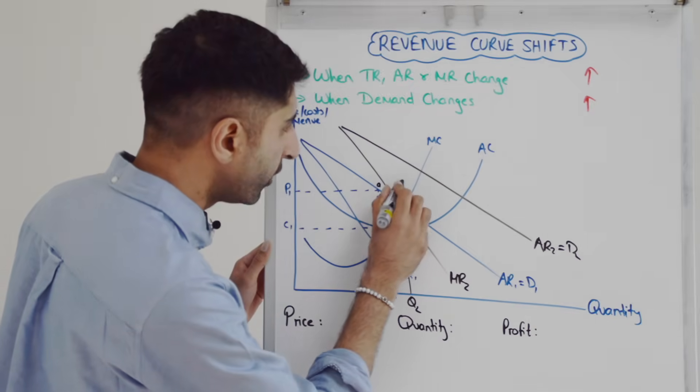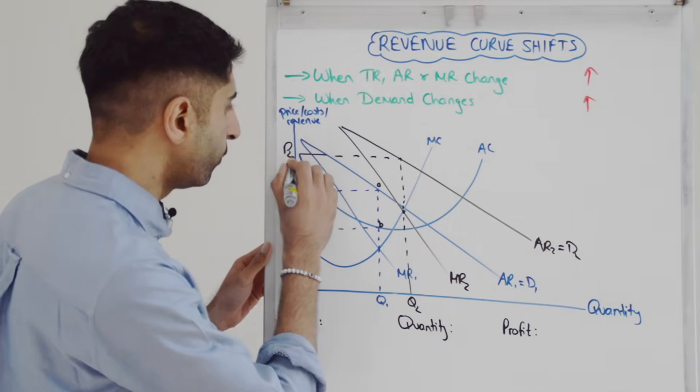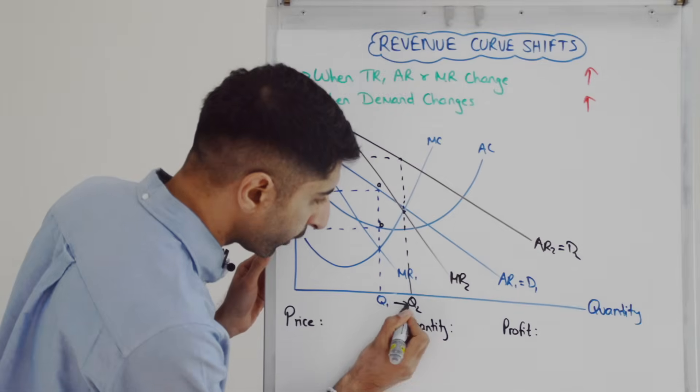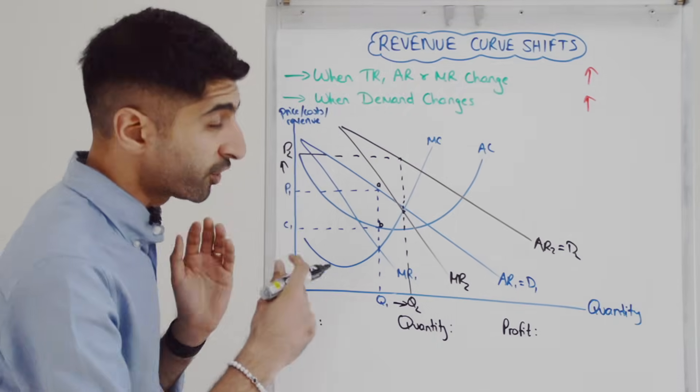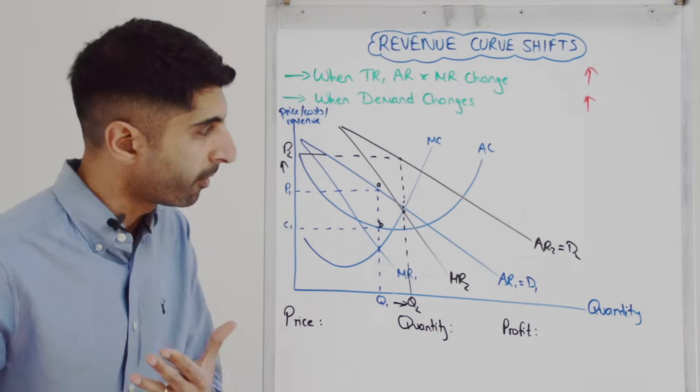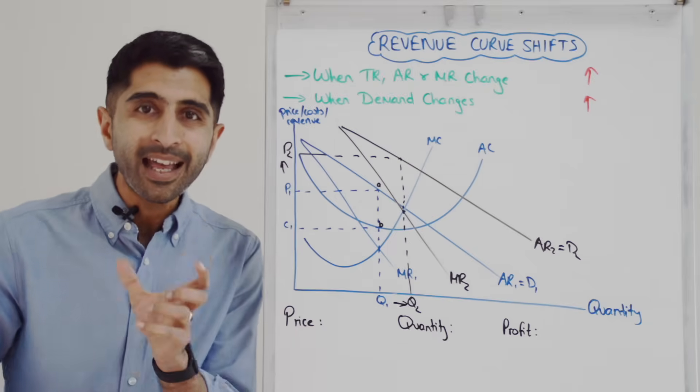We read the price off the new AR curve. So go up to the new AR curve to get the price, let's call that P2. So we can see that quantity has increased, price has increased.